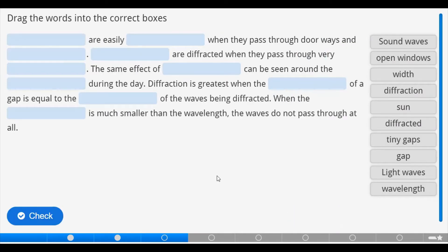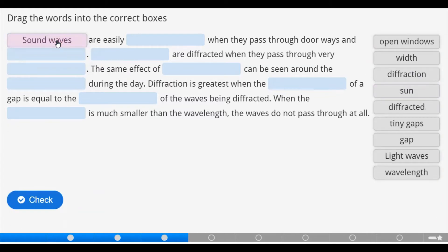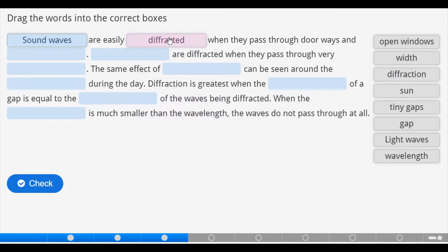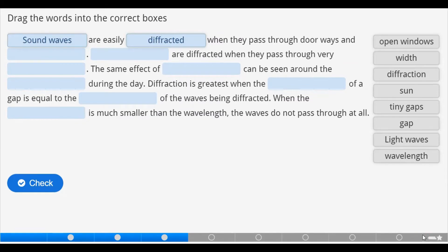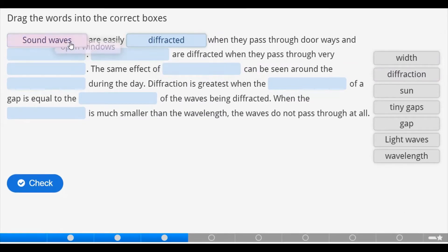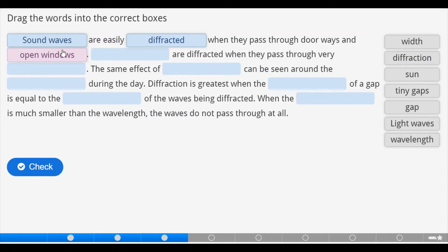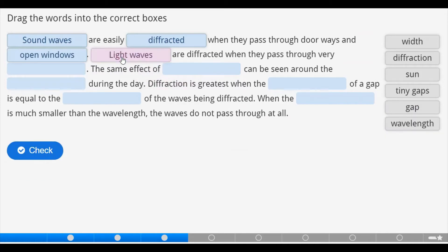We have to drag the following words into the correct boxes. Sound waves are easily diffracted when they pass through doorways and open windows.